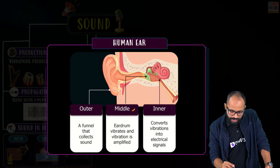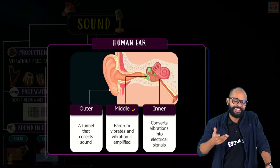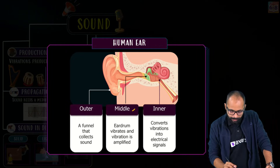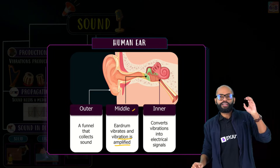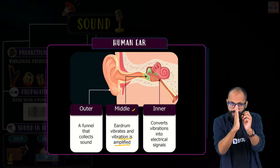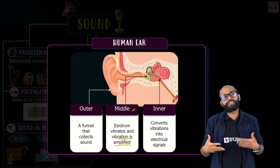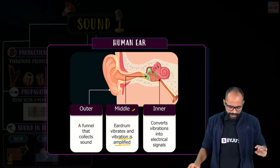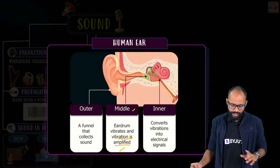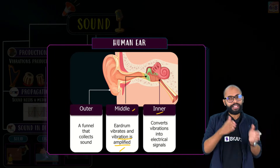The middle ear contains the eardrum. The sound that goes inside the ear vibrates the eardrum, which in turn vibrates three small bones — the hammer, anvil (incus), and stapes. These are the three smallest bones in our body. This amplifies the vibration of sound.